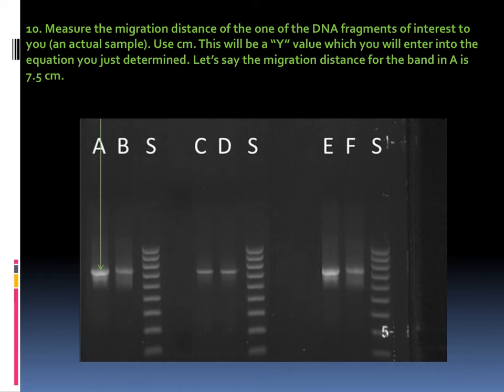So now you're ready to use that equation. You will go back to your printed figure and you will choose an experimental sample, for example, A as shown in this screenshot, and you will measure the migration distance for the band in lane A. And there's a green line there to show you what you're measuring. Let's say that we did that and we got a distance of 7.5 centimeters. Let's look at how to apply that distance.